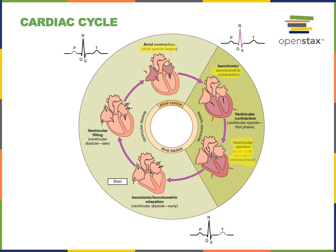Following ventricular ejection is isovolumetric relaxation, the early phase of ventricular diastole. During isovolumetric relaxation, the blood pressure inside the ventricles is decreasing but the blood volume remains constant. Then the last phase of the cardiac cycle — ventricular filling during the late phase of ventricular diastole — occurs when pressure inside the ventricles falls below the blood pressure inside the atria, causing blood to flow from the atria into the ventricles.